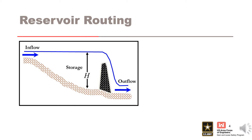Reservoir routing in RMC-RFA is based on the level pool routing method, where the inflow minus the outflow is equal to the change in storage. Specifically, RMC-RFA uses a finite difference approximation of the continuity equation called the modified Puls routing method.